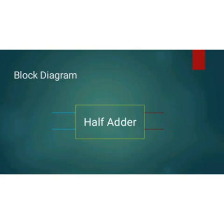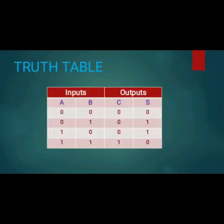Now we have the block diagram of a half adder. Here we have two inputs and two outputs — the two blue lines indicate the inputs and the two red lines indicate the outputs. Here we also have the truth table. The truth table represents the output and input combinations of a circuit, with two inputs and two outputs.